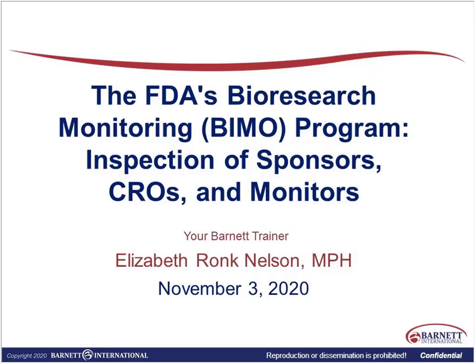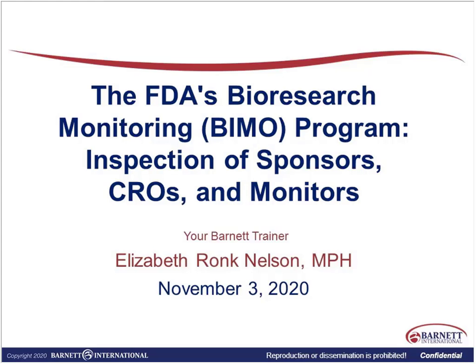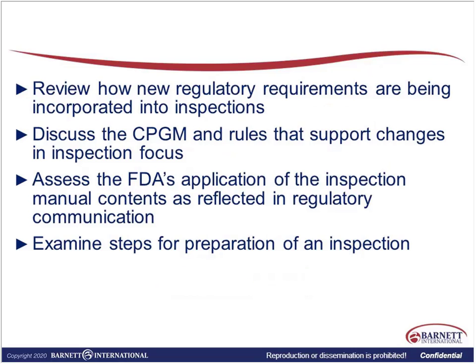They use a document called the FDA's Compliance Program Guidance Manual, and we're going to talk specifically about 7348.810. We certainly have that as a handout here. Really, this is how the FDA conducts those inspections — it's the SOP for how they conduct those inspections. It's very helpful to understand what they're looking for and make sure that our quality subsystems align with that.